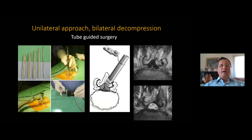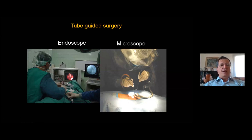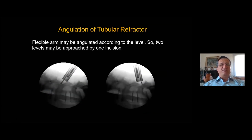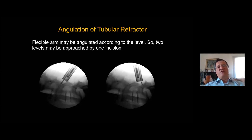I am quite familiar with tube-guided surgery. I was doing it at the beginning with an endoscope, then switched to the microscope — I am happier with that. The flexible arm can help you upgrade your view, and you can sometimes do two-level decompressions with only one incision.